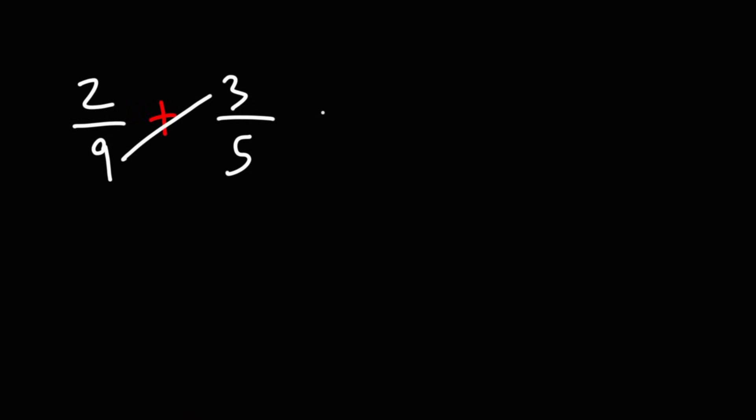We're going to multiply 9 times 3, which is 27, and then we're going to multiply 2 times 5, which is 10, and then the two bottom numbers, 9 times 5, which is 45.